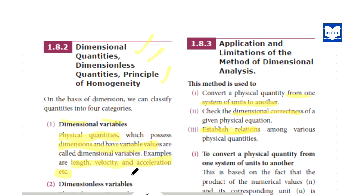For example: length, velocity, acceleration, etc. The dimension of length is represented as M0 L1 T0. That is a variable quantity — for instance, one tree height is 10 meters, another tree height is 2 meters. The value changes, but the dimension is the same.